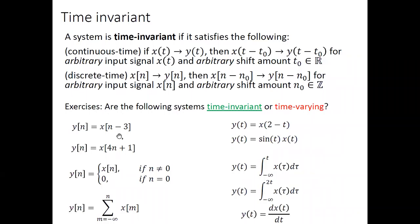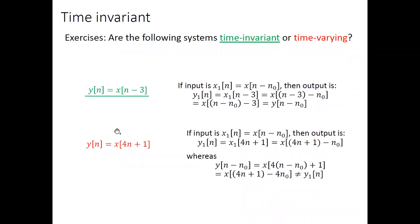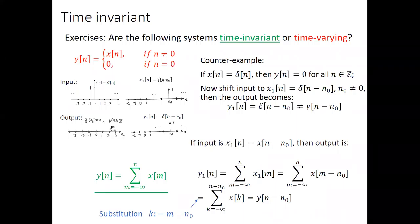For time invariance, the intuition is that when we shift the input signal by a certain amount, the output must also shift by the same amount. To prove time invariance, we need to show that this definition holds for all input signals. But to show that a system is time-varying (not time-invariant), we only need to find a counterexample. A common counterexample is the unit step signal. If we show that for the input being a unit step the output is something, but changing the input to a time-shifted unit step does not produce the same time-shifted output, then the system is time-varying.